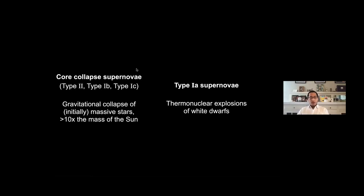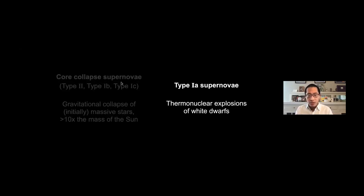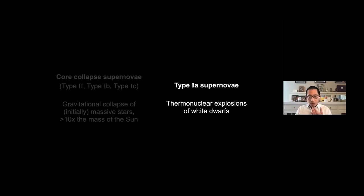As Mike said, there are two main classes of supernovae. There are the core collapse supernovae, which refer to type two and type one B and one C. These are the gravitational collapses of stars that were initially at least 10 times more massive than the sun. But I'm not going to discuss those. My focus is on type one A supernovae. We think that these are thermonuclear explosions of white dwarfs, but for the next few slides, we're going to pretend we don't even know what they are — we just see these supernovae.